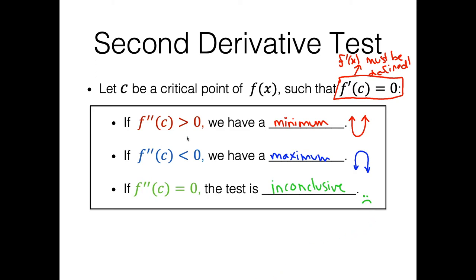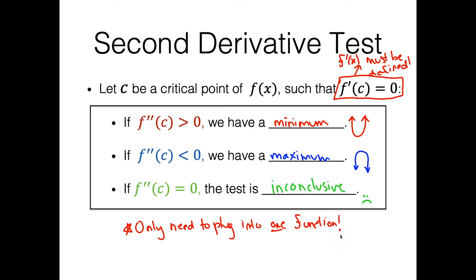Before we start talking about some examples, let's make a quick distinction between this and the first derivative test. The second derivative test only requires you to plug into one function — we only need to plug into one function. That makes some of our calculations a little bit easier. It's not as reliable as the first derivative test and there are places where it's just very challenging to take the second derivative, but when we can use it, it's pretty nice because we only need to do one numeric calculation as opposed to two.